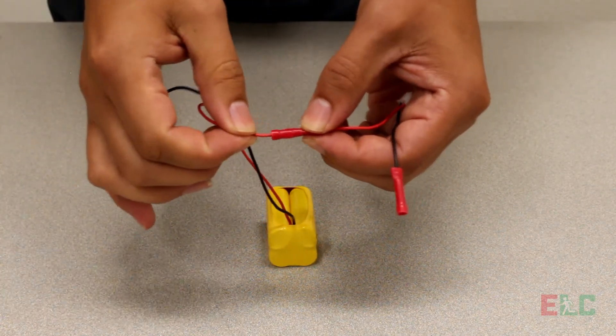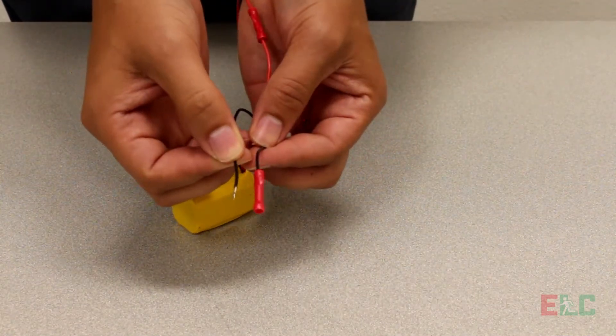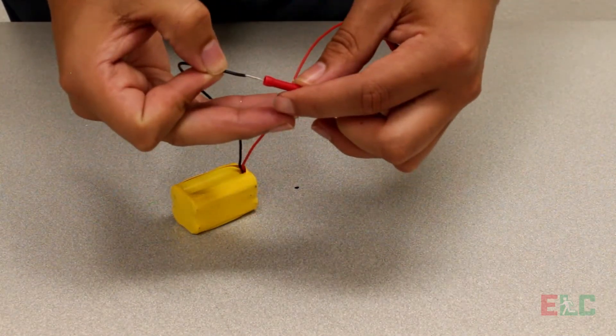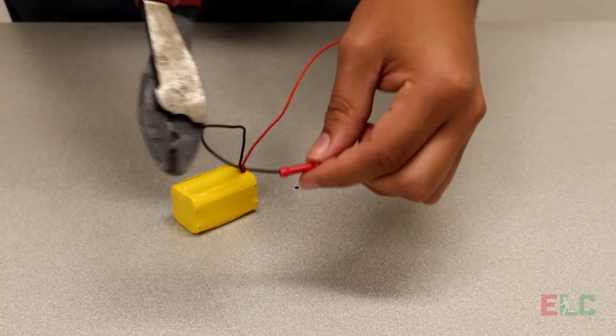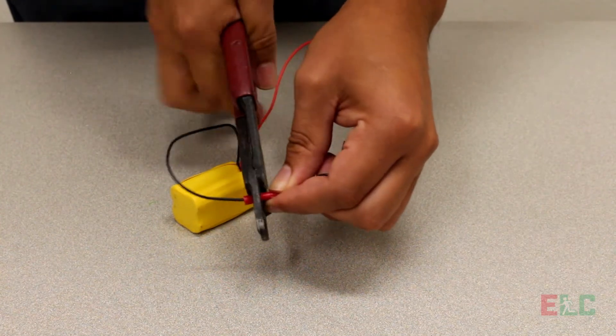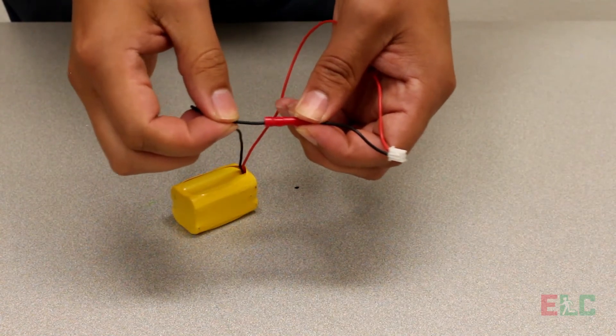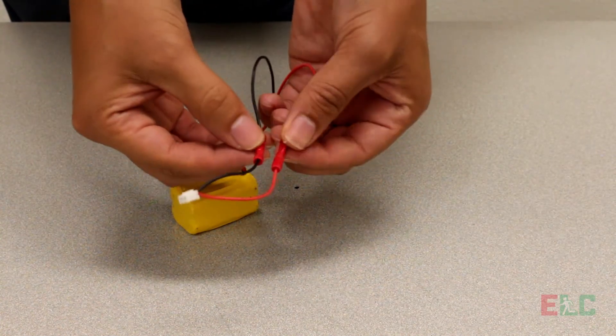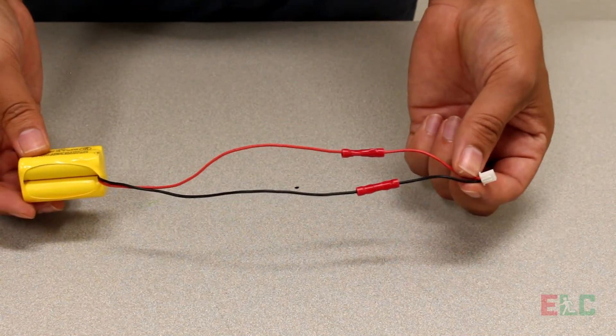Pull on the wire to make sure it's a secure connection. Repeat the step with the second wire. Your new battery is now ready to be used.